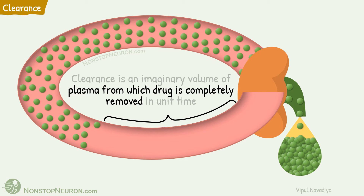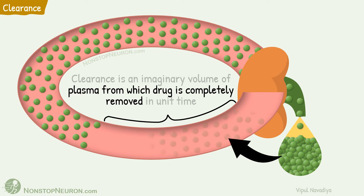And that exactly is clearance — it is an imaginary volume of plasma from which drug is completely removed in unit time. Retrospectively, we can also say that this eliminated amount of drug was initially contained in this much plasma.